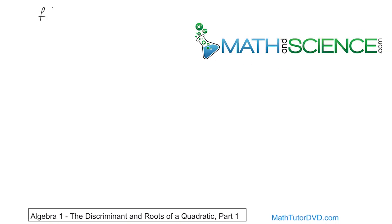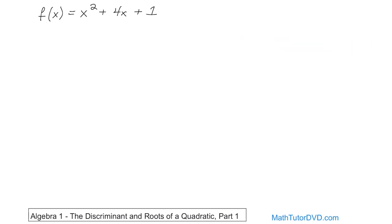Let's take a look at a function. Remember a while back we introduced the concept of what a function is. f of x — let's call it and say it's equal to x squared plus 4x plus 1. By now you should understand that this is a function of x, meaning we plug in the value of x, calculate the answer, and graph it. You also know that it's quadratic because it has an x squared term in it.